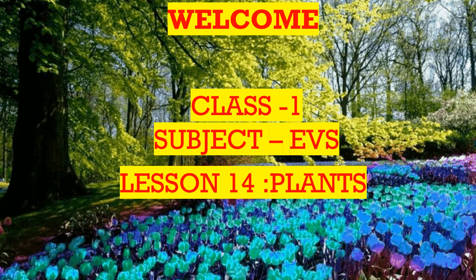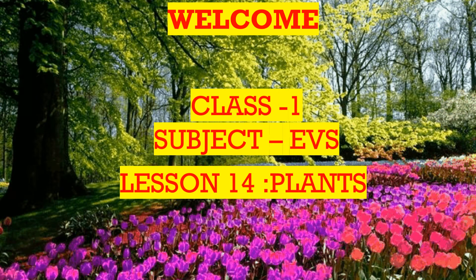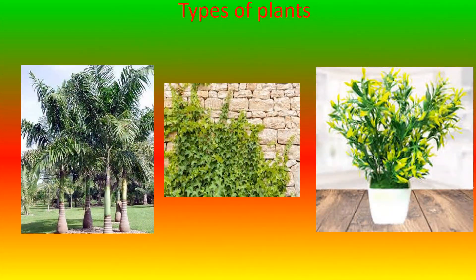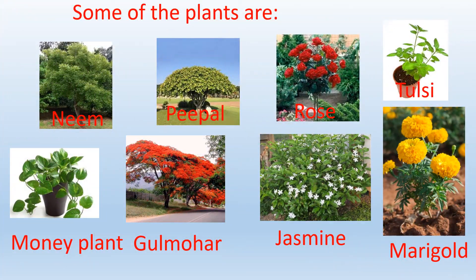Lesson 14, page 85. There are many types of plants around us. They are of different shapes and sizes. Some are very big, some are small, and some plants climb and grow. Children, open your book and turn to page 85.